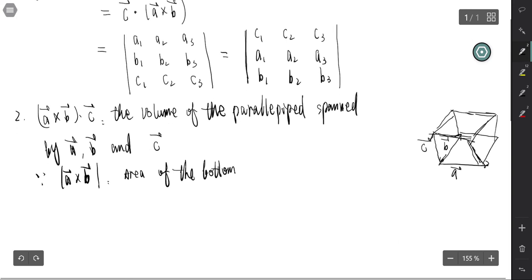And let's see C dot A cross B. Let's see the length of C times cosine theta. That's with A cross B.